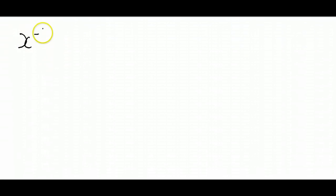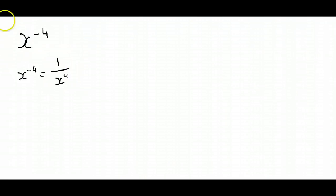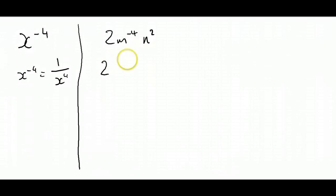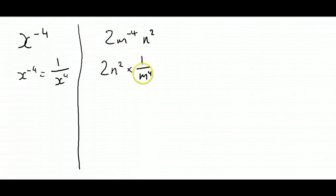Let's do a couple of examples. If we've got x to the power of negative four, according to our index law that's going to be expressed as one over x to the power of four — nice and easy. Now let's try this one: we've got two times m to the power of negative four times n squared. The two and n squared have no negative indices, so we can't really simplify those. But m to the negative four is expressed as one over m to the power of four.